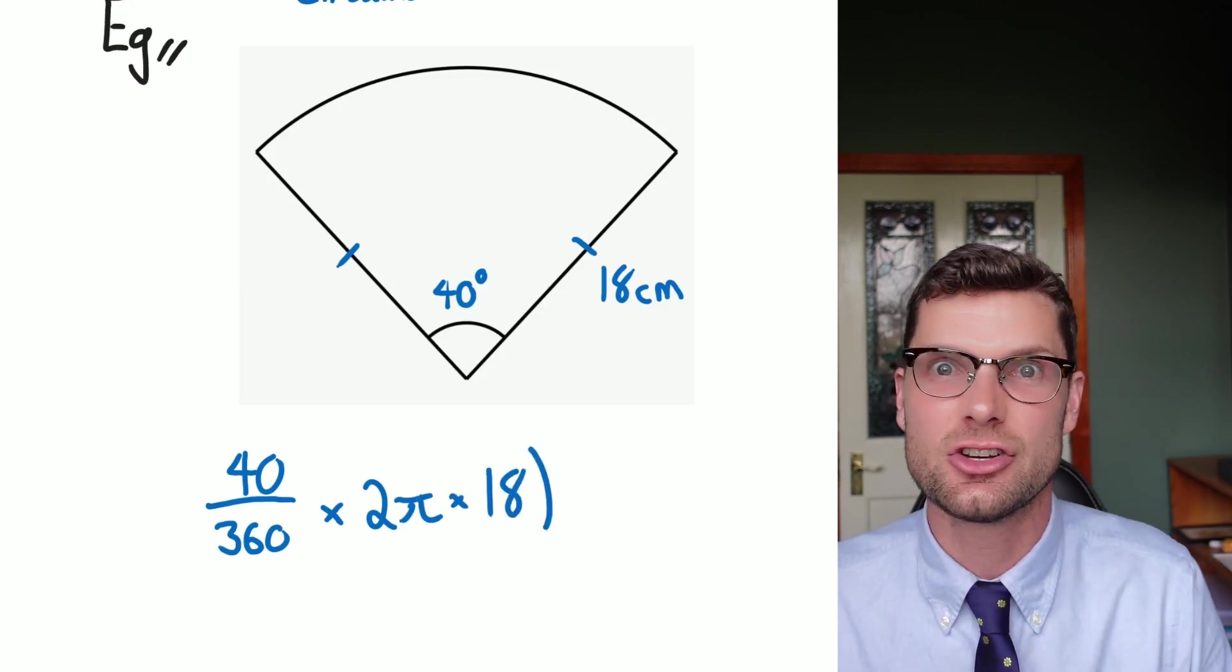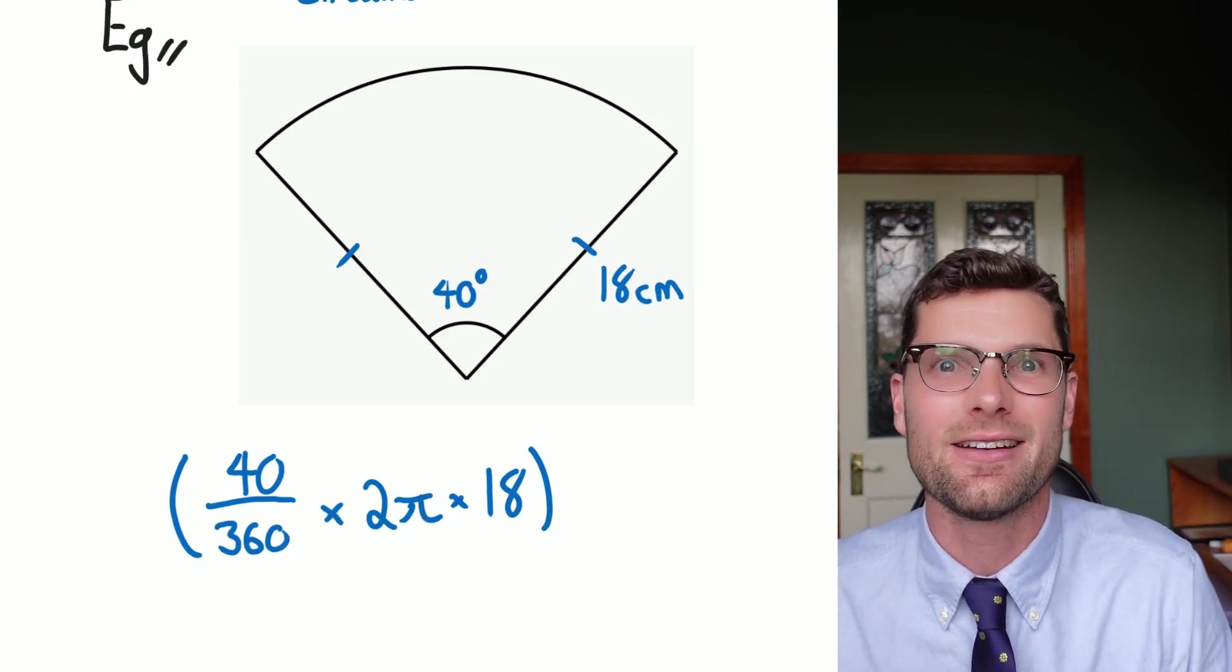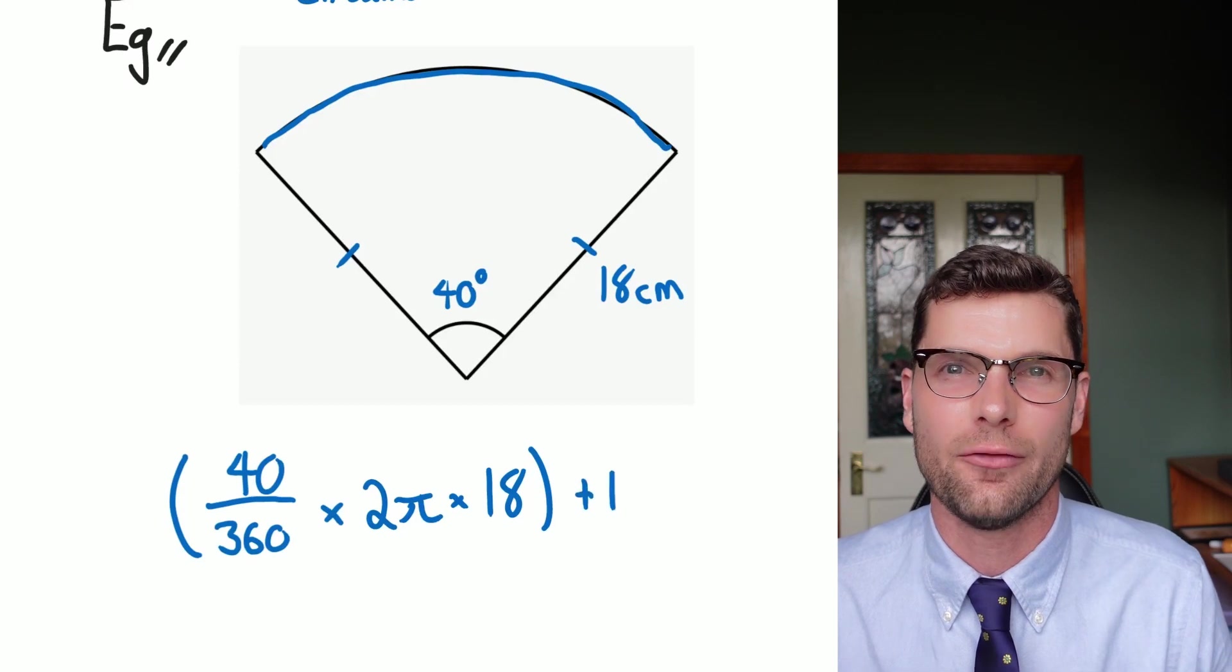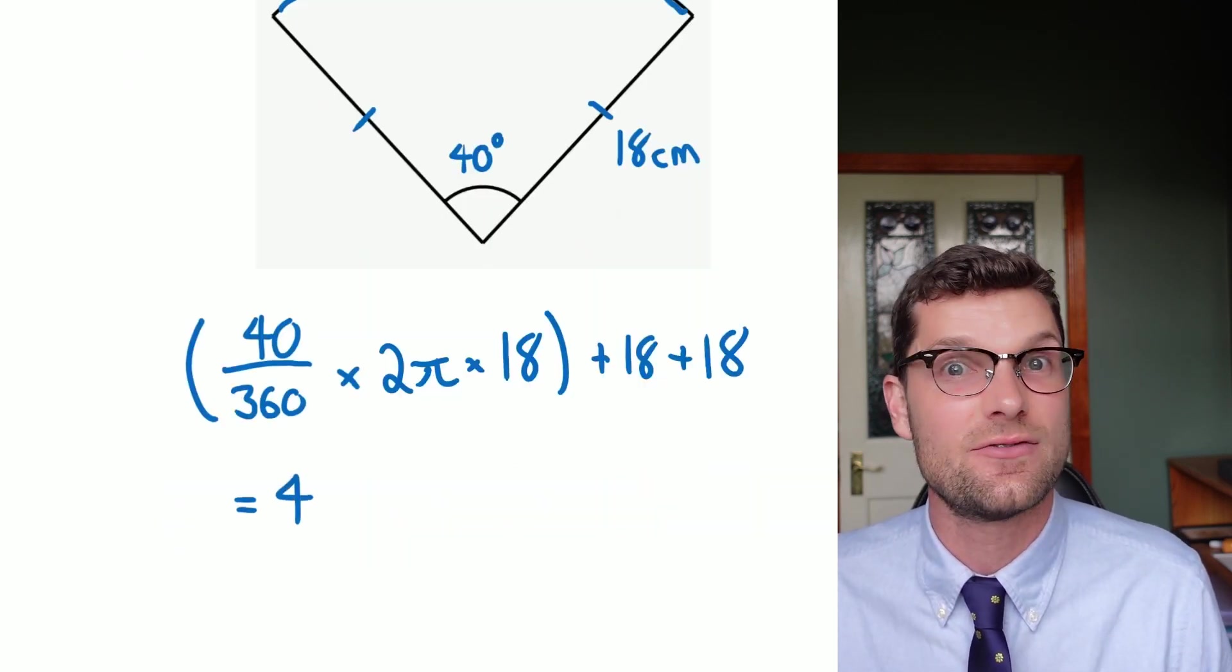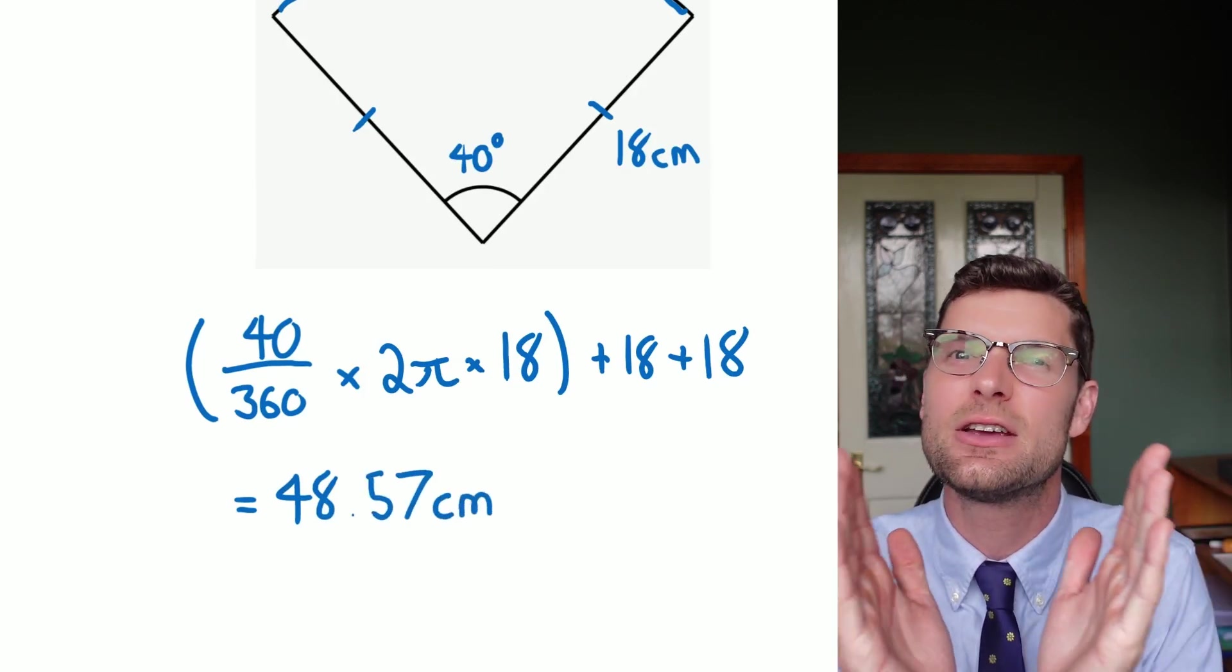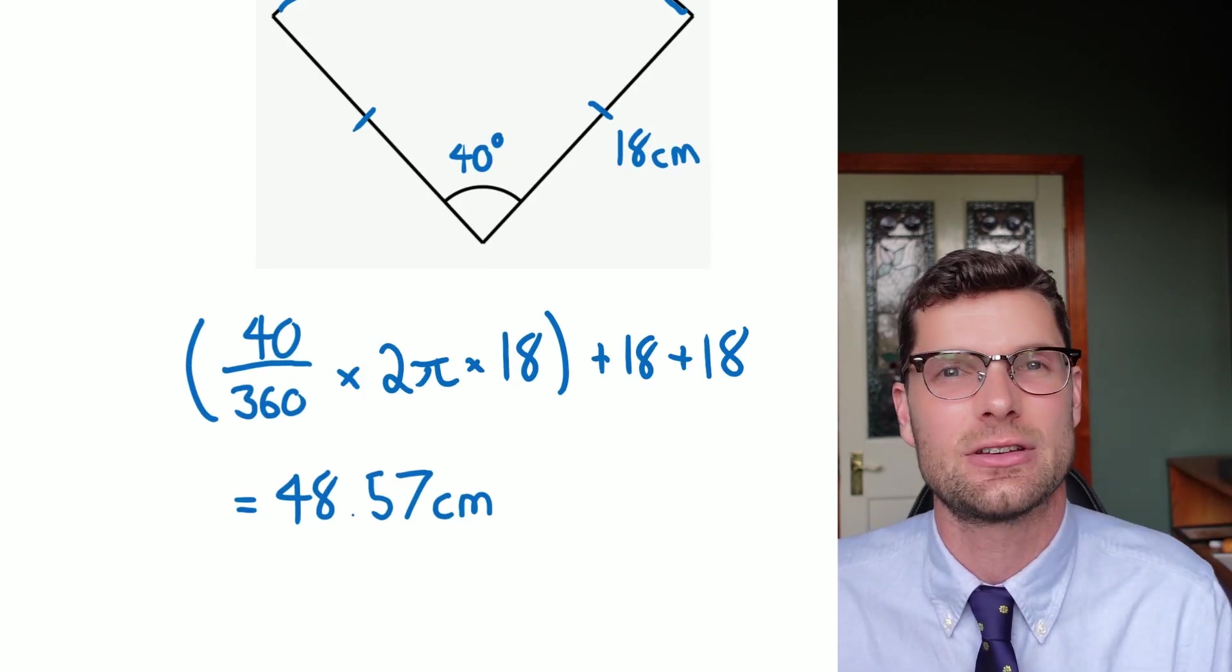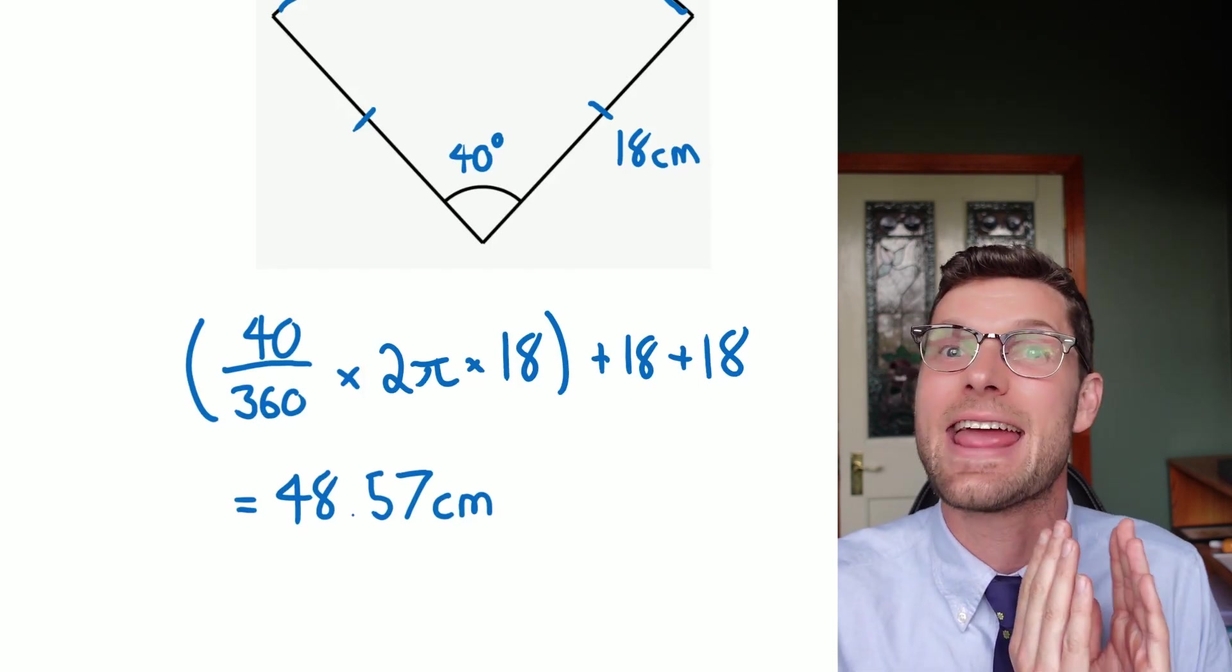That takes care of the curve section, but I have to remember those two radii in order to get the whole way around, so I've got to add 18 plus 18 to finish this question off. If I type that in my calculator, I get the answer of 48.57 centimeters, and this kind of makes sense. The two 18s would be 36, and because I've got a pretty small section, I know that that curve bit isn't going to be too far.